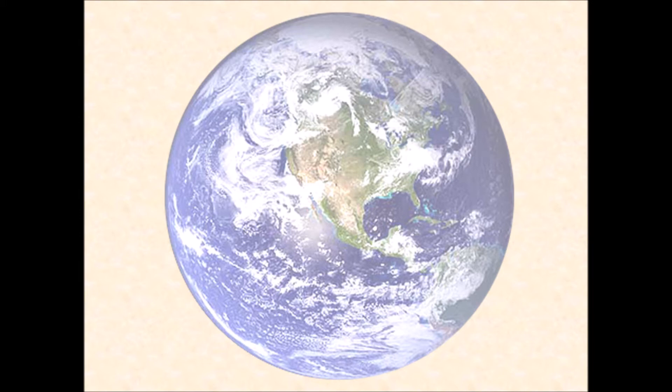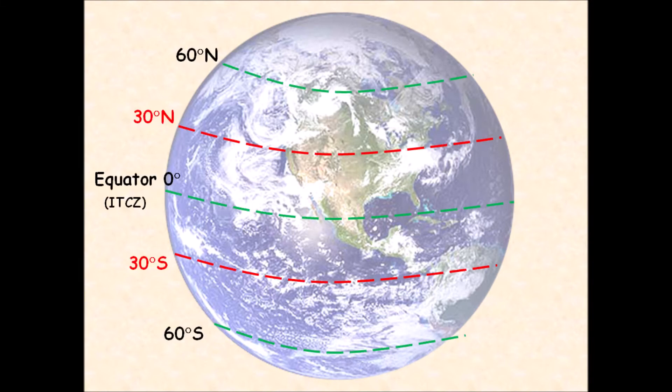Let's draw a diagram of global atmospheric circulation so we can get familiar with this concept in more detail. If you're working on the worksheets, you have a box with the earth in the middle and we're going to turn this into a diagram. We're going to start by adding in our lines of latitude. We've got the equator at zero degrees, which we can also call the intertropical convergence zone or ITCZ for short. Then we've got 30 degrees north and 30 degrees south latitude lines, as well as 60 degrees north and 60 degrees south.